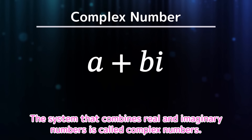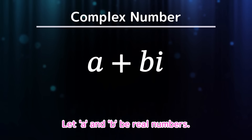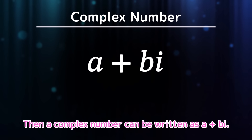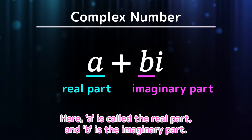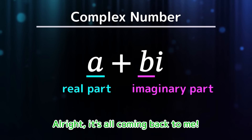Of course — the system that combines real and imaginary numbers is called complex numbers. Let A and B be real numbers. Then a complex number can be written as A plus BI. Here, A is called the real part and B is the imaginary part. It's all coming back to me.